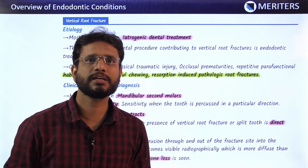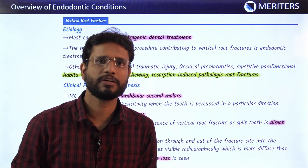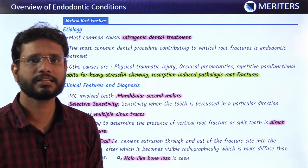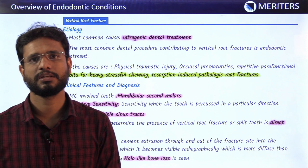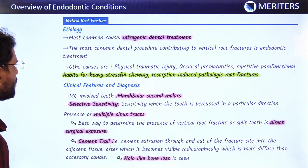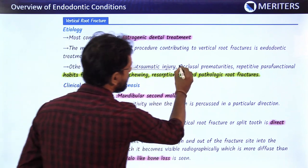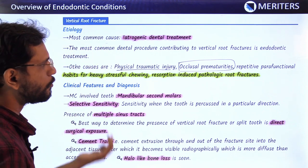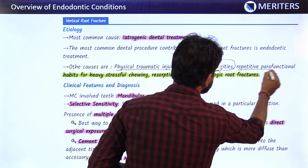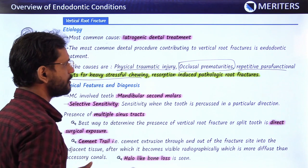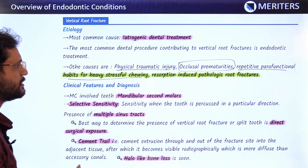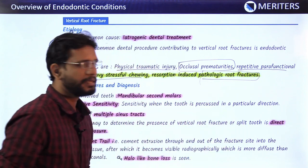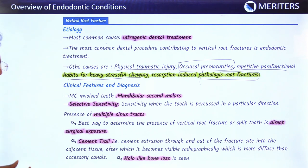Vertical root fracture (VRF) is one of the most difficult diagnoses for an endodontist, but certain characteristics help identify it. Most commonly it is iatrogenic — endodontic treatment itself is one of the most common causes. Other causes include traumatic injuries, occlusal prematurities left after restoring a tooth, repetitive parafunctional habits with heavy occlusal load, and resorption-induced pathologic root fractures.